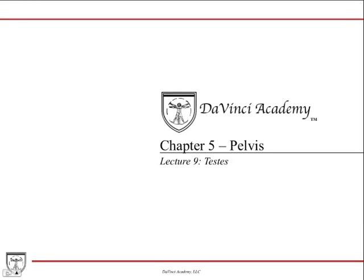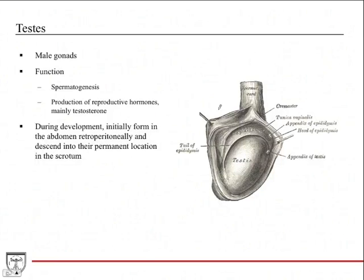This is the first of three lectures covering the male reproductive tract. In this lecture, we're going to talk about the testes. The testes are the male gonads, analogous to the female ovaries. They have two main functions: spermatogenesis, which is the generation of sperm, and they also produce reproductive hormones, mainly testosterone. So they're responsible for all the secondary sex changes that result from testosterone production.